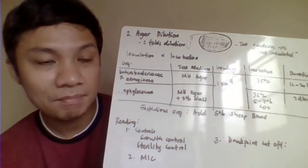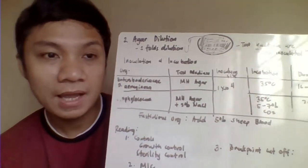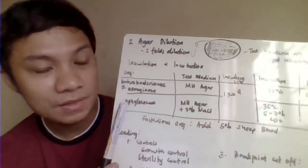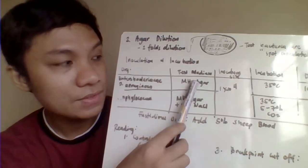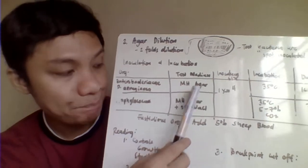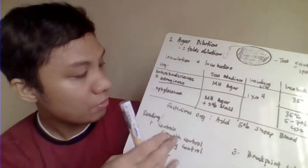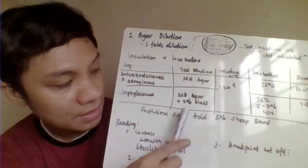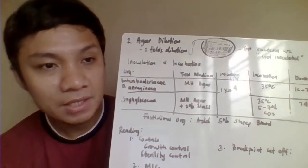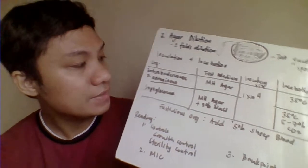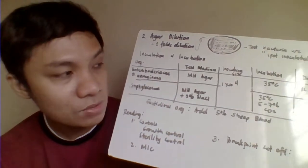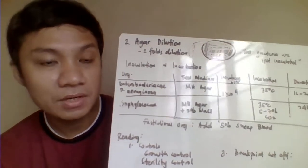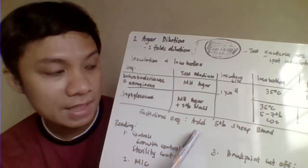You still need to prepare your dilutions. For example, with Enterobacteriaceae and Pseudomonas aeruginosa, the inoculum medium is Mueller-Hinton agar. For Staphylococcus, you use Mueller-Hinton agar plus 2% sodium chloride. Incubate at 35 degrees Celsius — for Enterobacteriaceae, that is 16 to 20 hours, and for Staphylococcus, 24 hours. For fastidious organisms, supplement Mueller-Hinton agar with 5% sheep blood.